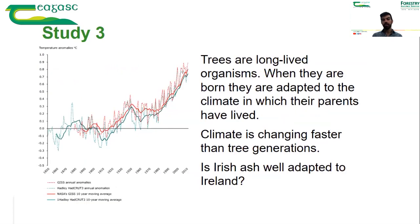For the third study, we considered that ash trees are long-lived organisms. When they germinate from seeds, they need to be ready to live for centuries. They cannot move from where they grow, meaning that for the next decades and centuries they will have to face every condition at their location. This means that at the moment they are born, they need all the tools they will need in the next few hundred years.